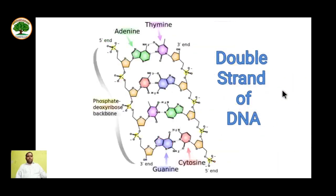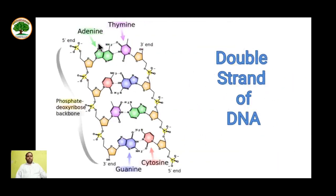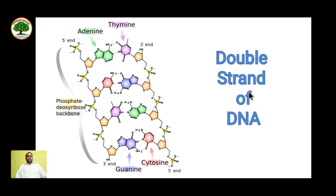Let's see the double-stranded DNA. These two strands of DNA are anti-parallel to one another. The nitrogenous bases form hydrogen bonds between the strands: guanine and cytosine form three hydrogen bonds, whereas adenine and thymine form two hydrogen bonds. This sugar-phosphate backbone of both strands forms the double helix.